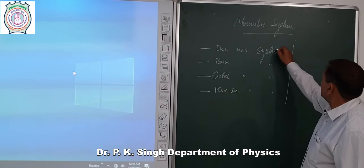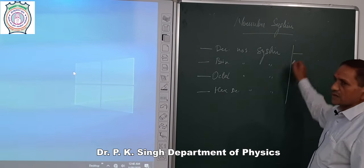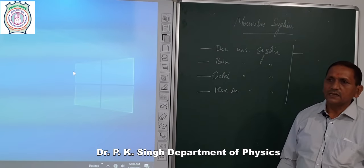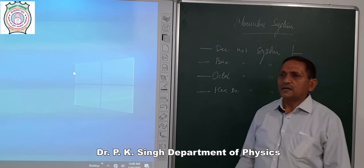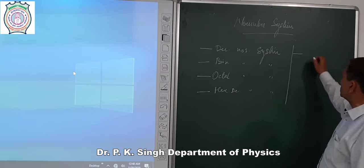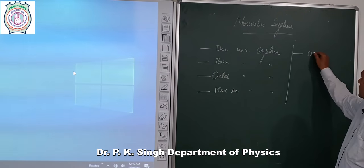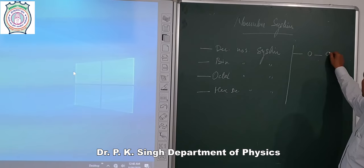Here, firstly we will discuss the decimal number system. Decimal number systems are those number systems in which there are 10 basic symbols used. These basic symbols are 0 to 9 digits.